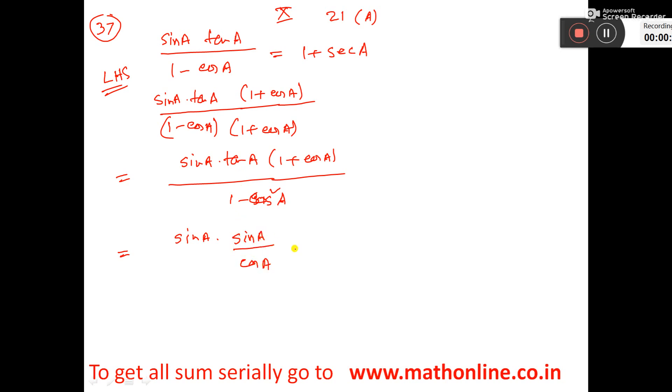Into 1 plus cos A, and denominator 1 minus cos²A, that will be sine²A. So this sine A, sine A will be sine²A, that is cut with this.